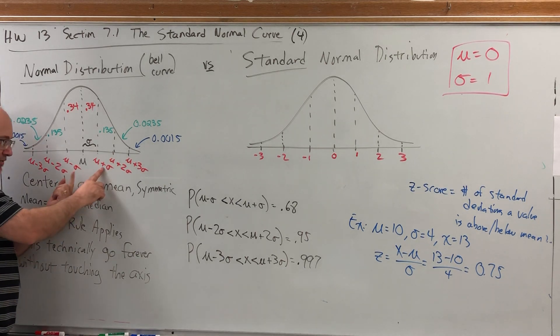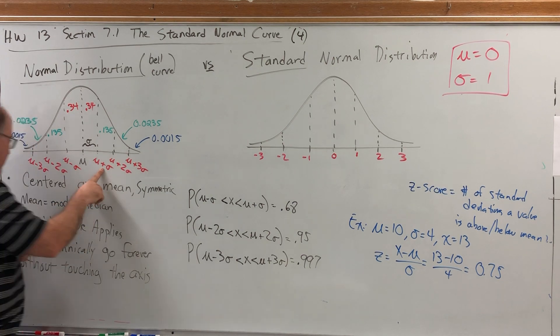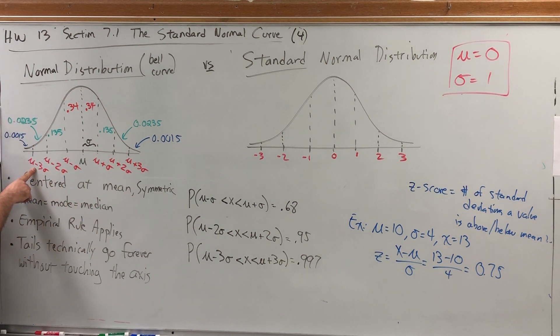In this picture, this thing right here, its z-score is 1. It's 1 standard deviation above the mean. This guy way over here, his z-score is negative 3. He's 3 standard deviations below the mean.